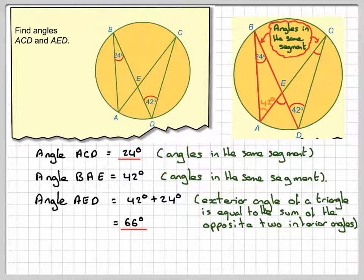So this has been a video to show you how to use angles in the same segment, and then once you've used that a couple times, you can find an exterior angle of a triangle, knowing that it's the sum of the opposite two interior angles of the triangle. I hope you've understood, and I thank you very much for watching.